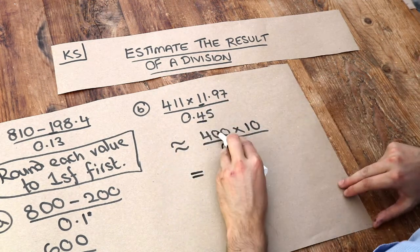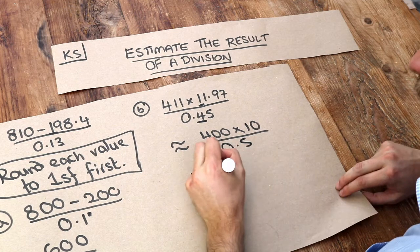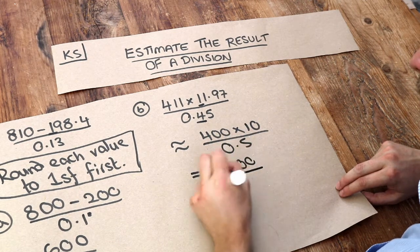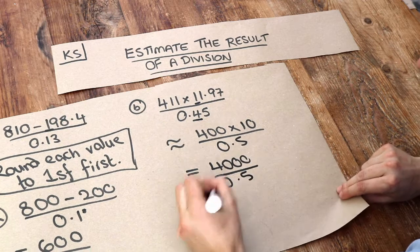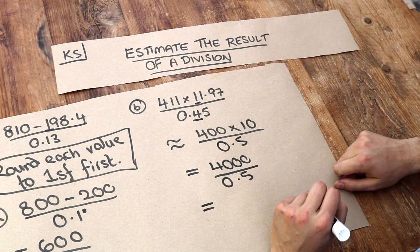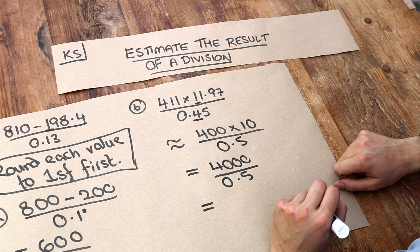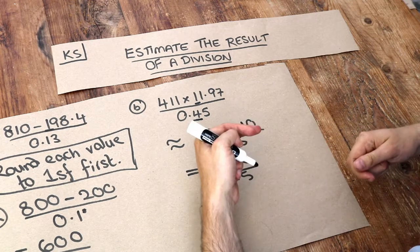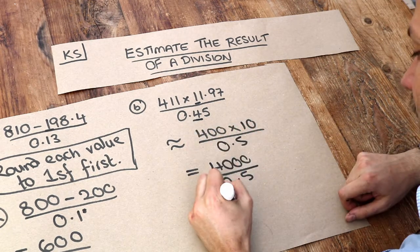Let's simplify this. 400 times 10 is 4,000. We're dividing by 0.5. That's the same as saying how many halves go into 4,000. Well, half goes into whole twice, so therefore it must go in 8,000 times.